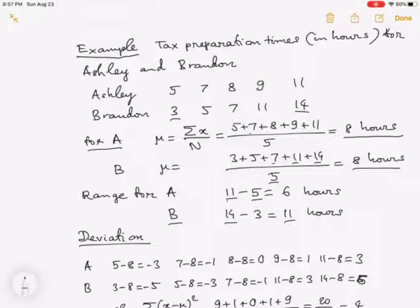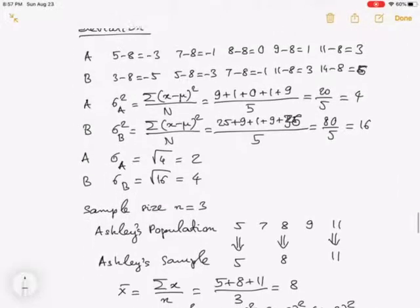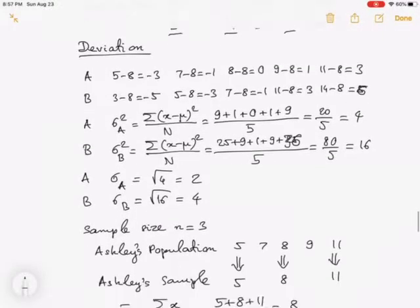Because the chief accountant probably prefers a more consistent tax preparation time with less variability. Now we find the deviation. The deviation is x minus mu. For Ashley, mu equals 8, therefore 5 minus 8 is negative 3, 7 minus 8 is negative 1, 8 minus 8 is 0, 9 minus 8 is 1, and 11 minus 8 is 3.